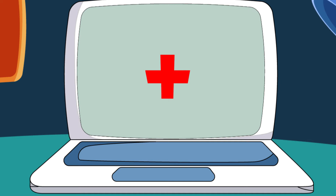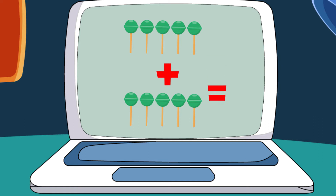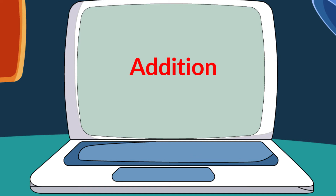Kids, what are add-ins, or what is addition? The numbers to be added are called add-ins. Like we see, there are five lollipops on the screen, and if we add more five lollipops all together, it becomes ten lollipops. We added the lollipops together and counted them — that is called addition.